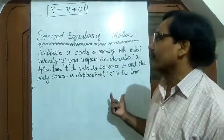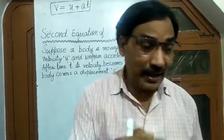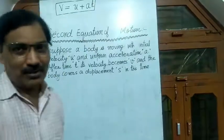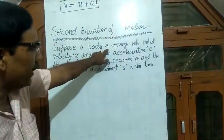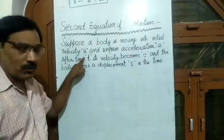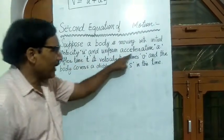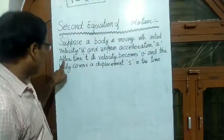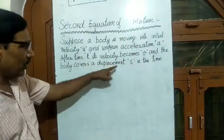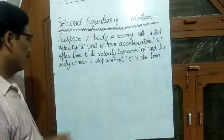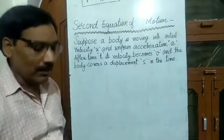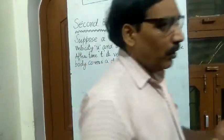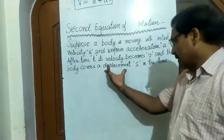Now in this video, we will study the second equation of motion. We will have some considerations. Suppose a body is moving with initial velocity U and uniform acceleration A. After time T, its velocity becomes V, and the body covers a displacement S in this time. Here, we will use this displacement.